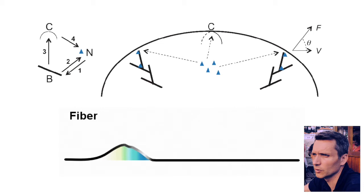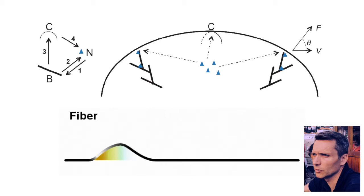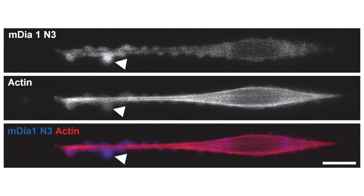What they learned from the simulation is that the curvature of the membrane is locally changing, and as the curvature changes it affects the rate of polymerization. This breaks the symmetry between the front side and the back side of the fin, which propagates the fin in one particular direction.